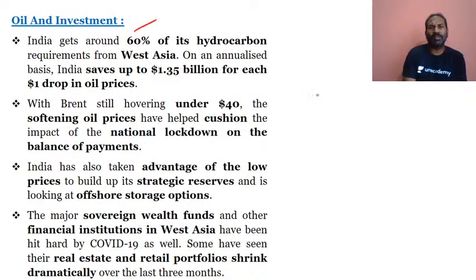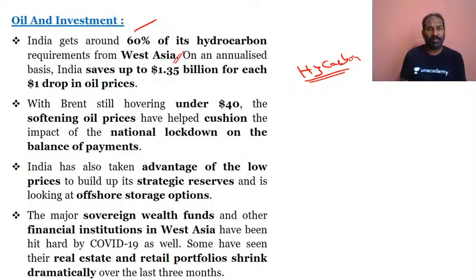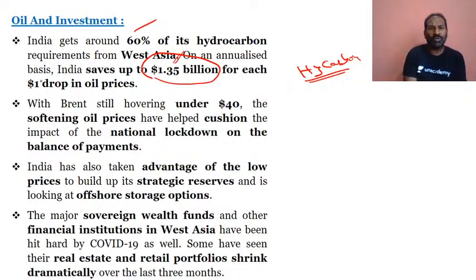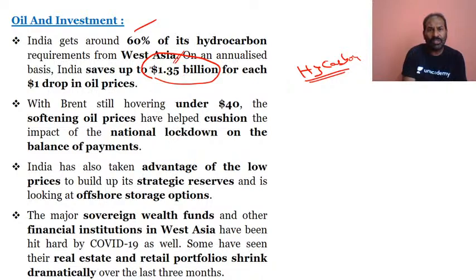Regarding oil and investment: 60% of India's hydrocarbons have been fulfilled from West Asia — very important for better understanding. On an annualized basis, India saves 1.35 billion US dollars for each one dollar drop in oil prices. This is why it is a very important strategy — both economically and strategically — to revamp the economic diplomacy with the Persian Gulf and West Asian countries. India's hydrocarbon needs of 60% are met by West Asia.